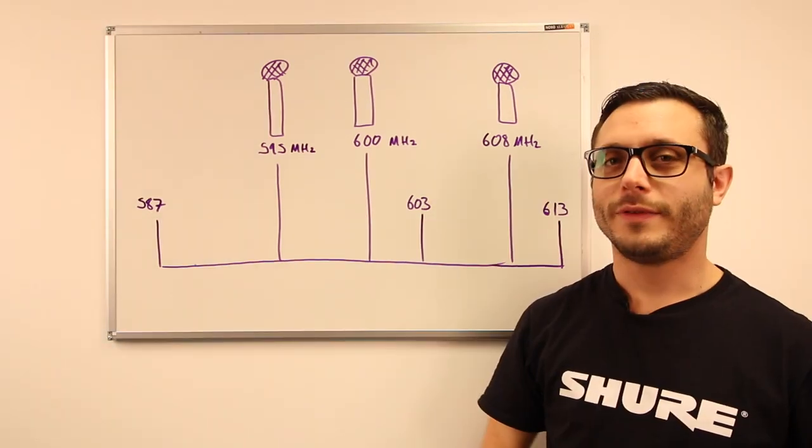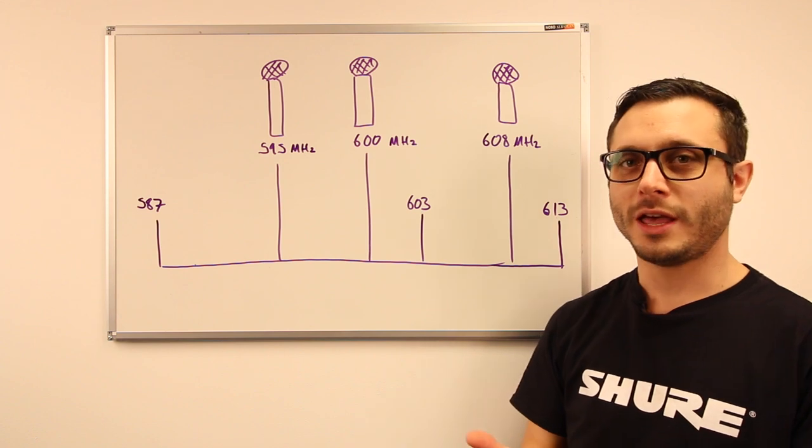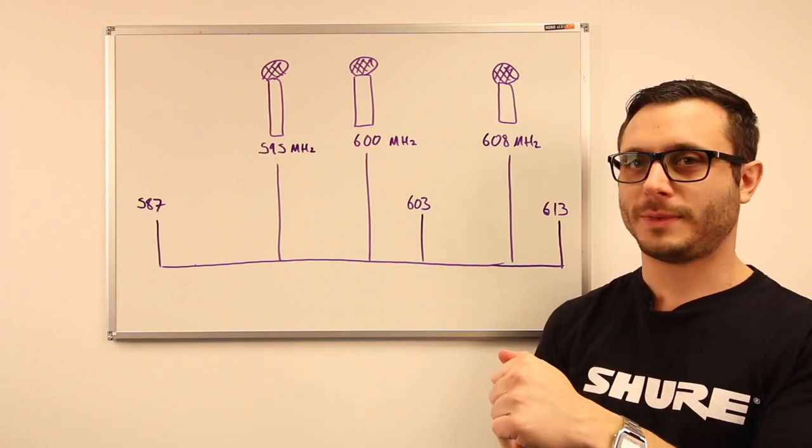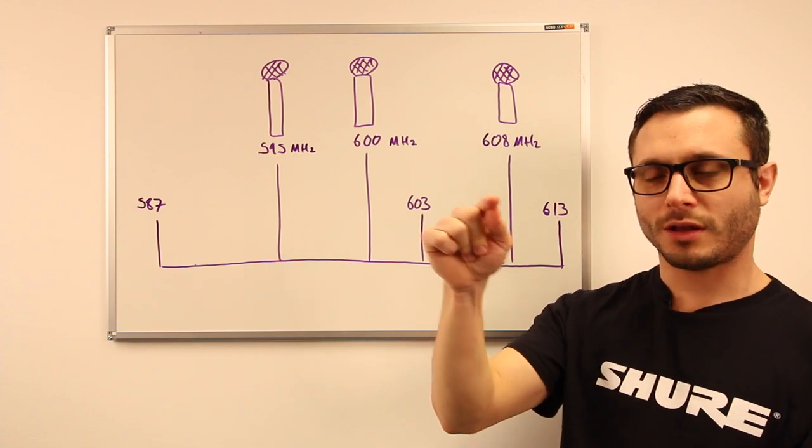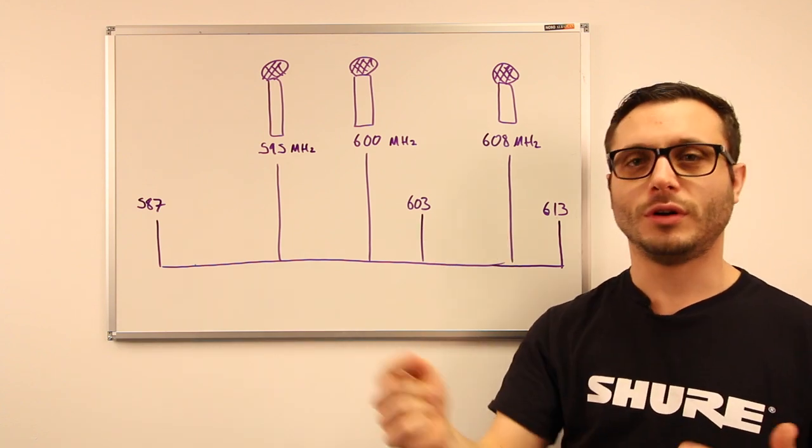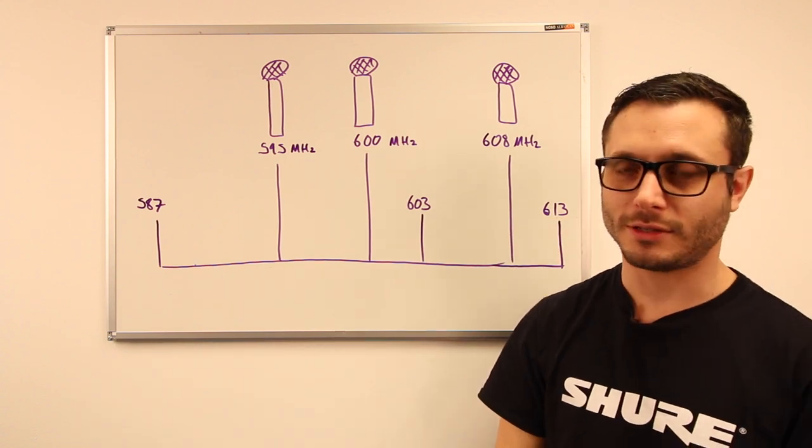The type of intermodulation we looked at a moment ago was called two transmitter third order. That's because we looked at only two transmitters, and the third order comes with the double of frequency one minus a single of frequency two, or a double of frequency two minus a single of frequency one.